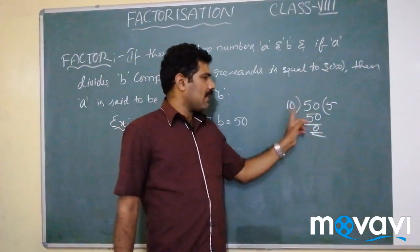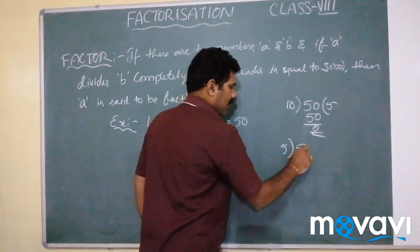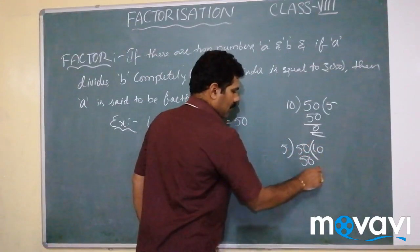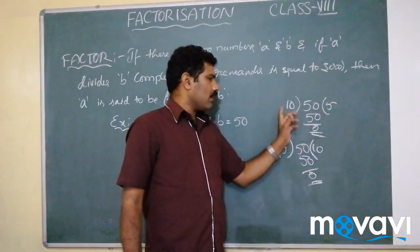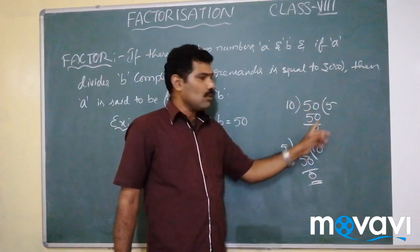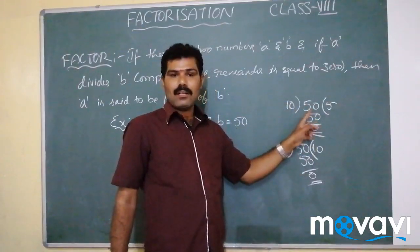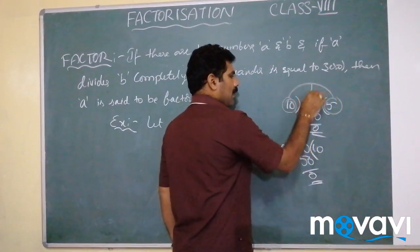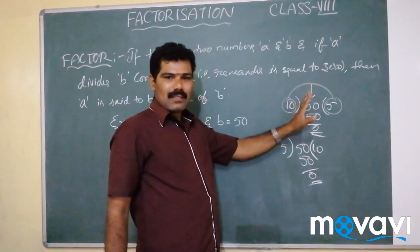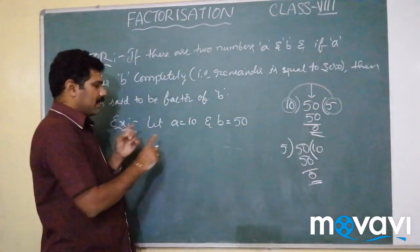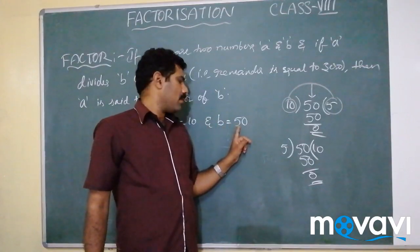Here 5 is the quotient and 10 is the divisor. If 10 divides 50 completely, you get a quotient. That quotient is also a factor of the dividend. Therefore, divisor and quotient are both factors of the dividend. For our example, A is 10 and B is 50 — A divides 50 completely, so we can say A is the factor of B.